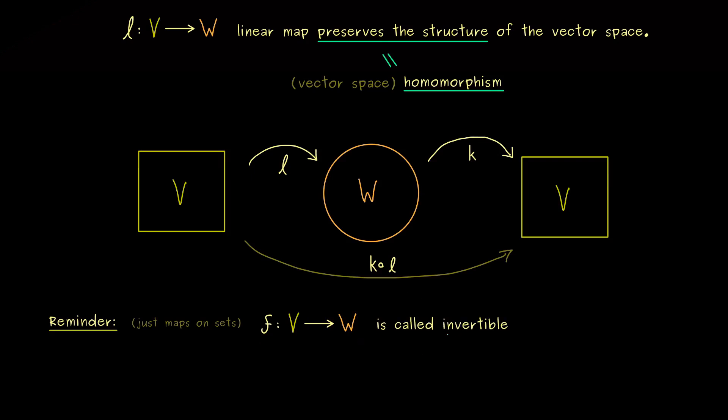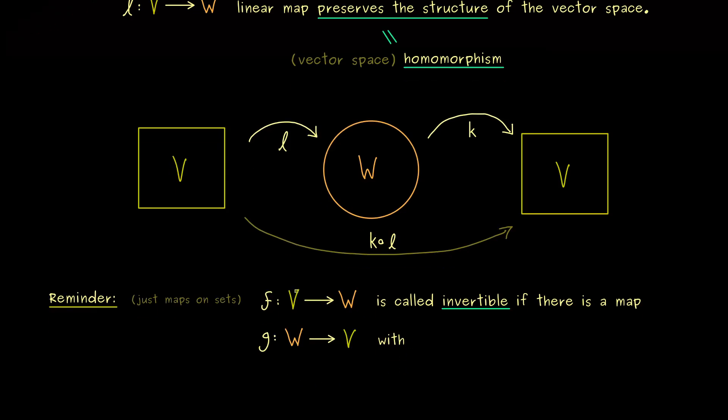And then the notion invertible makes sense for a map if we find another map g. And now not so surprising, this g should map W to V. And it should just invert the action of f.